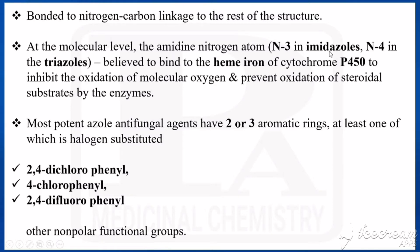Which is the amidine nitrogen for imidazole? That is the third nitrogen. And which is the amidine nitrogen for triazole? That is the fourth nitrogen. If the azole is an imidazole, the third nitrogen binds with the heme ion of 14-alpha demethylase. If it is a triazole, the fourth nitrogen binds with the heme ion of cytochrome P450, thereby inhibiting that enzyme.